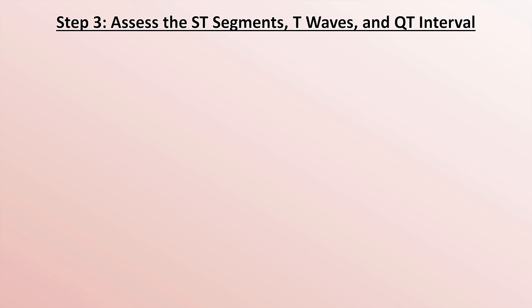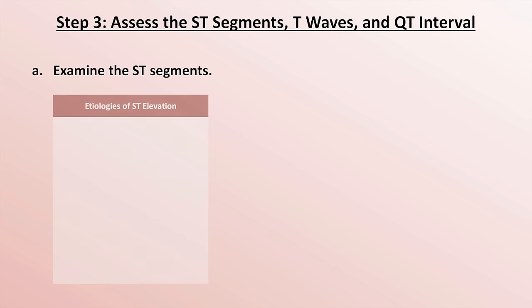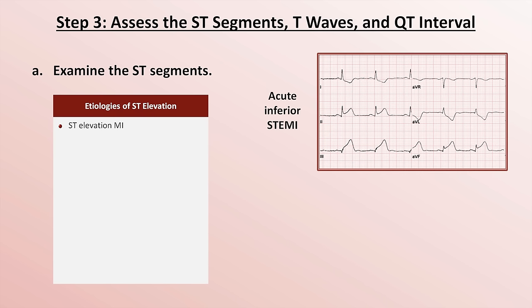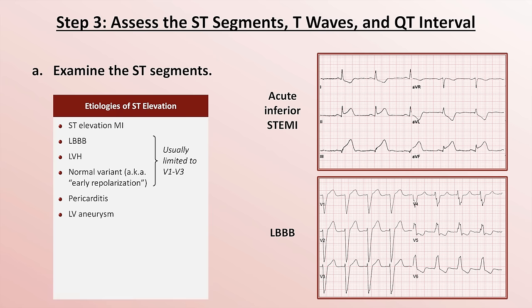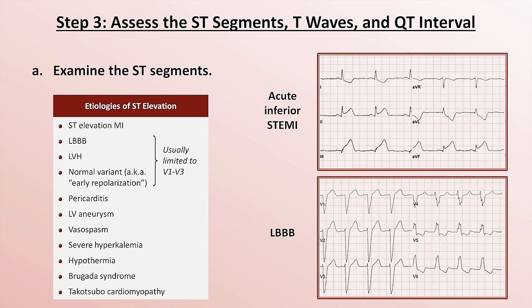On to step three: assess the ST segments, T waves, and QT interval. The first thing to look for is ST elevation, which is generally only notable if the elevation is one millimeter or more in at least two anatomically contiguous leads. By far the most well-known etiology is an ST elevation MI. However, there are many more, most notably left bundle branch block, left ventricular hypertrophy, and early repolarization — usually limited to leads V1 through V3. Remaining causes include pericarditis, an LV aneurysm, vasospasm, severe hyperkalemia, hypothermia, Brugada syndrome, and Takotsubo cardiomyopathy, frequently referred to as broken heart syndrome.